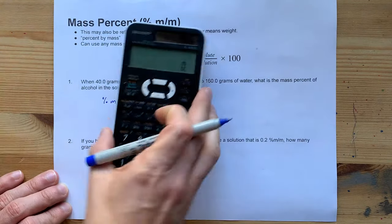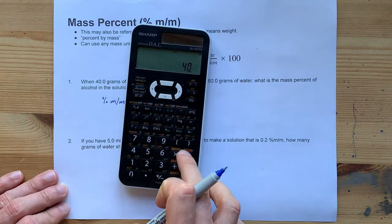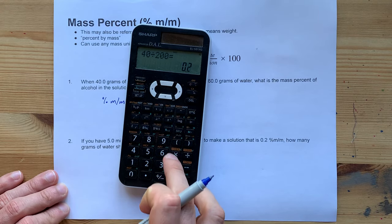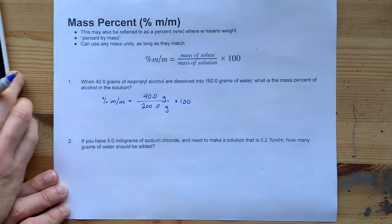All right, so 40 out of 200 times 100 gives me 20%.